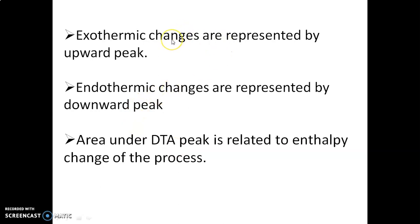If an exothermic reaction is taking place in the sample, the sample temperature becomes higher than the reference temperature. Sample minus reference gives a positive delta T, and we get an upward curve on the graph. If the reaction is endothermic, the sample absorbs heat from the surroundings, so the sample temperature becomes lower than the reference. Delta T becomes negative — less than zero — giving a downward curve. An upward curve in DTA indicates an exothermic reaction; a downward curve indicates an endothermic reaction.